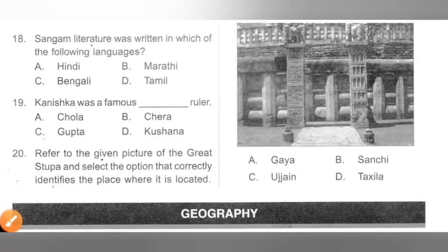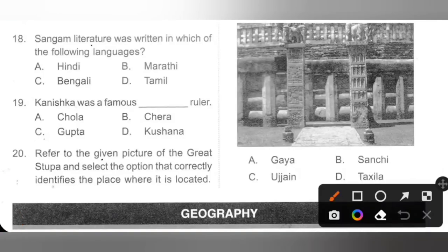Question 18: Sangam literature was written in which of the following languages? A. Hindi, B. Marathi, C. Bengali, D. Tamil. Sangam literature was written in Tamil. Option D is the correct answer.